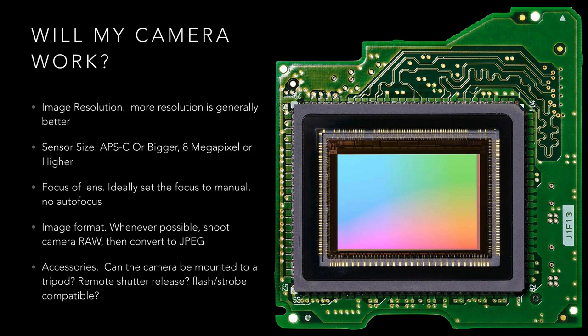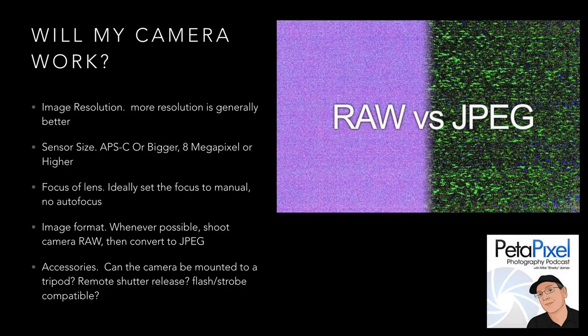When evaluating your camera, here are the things to look for. It's almost impossible to buy a camera these days with less than 8 megapixels, but I would be targeting 12 or more. The sensor size is super important. It's ideal that you can set the focus of the lens manually and try not to use autofocus — this is yet another reason why smartphones are such a hassle. Whenever possible, you're going to want to shoot in camera raw. It's truly the difference between an original painting and a Xerox copy in terms of actual image quality.